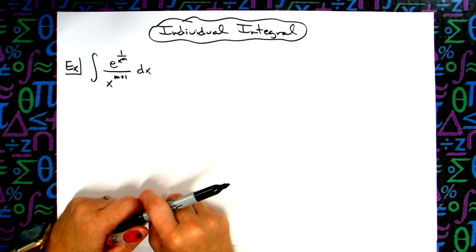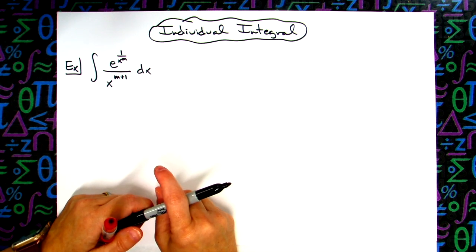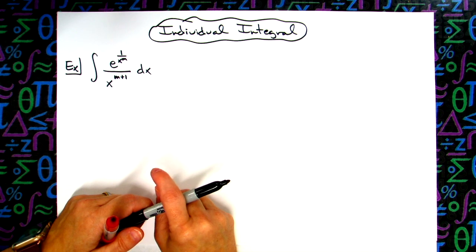In this video we're going to do an individual integral. We're going to take a look at the integral of e raised to the 1 over x to the m, all over x raised to the m plus n dx.